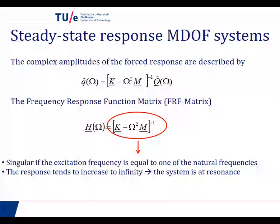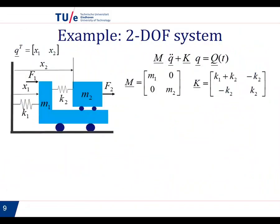Let us look at this matrix with an example. The example we will consider is a two-degree-of-freedom system. We have two masses: mass 1 is connected to the fixed world with a spring k1, and mass 2 is connected to mass 1 with a spring k2. x1 and x2 are absolute coordinates; x2 is defined with respect to the fixed world. We can have a force acting on coordinate 1 and a force acting on coordinate 2. These are the matrices that correspond to this system.